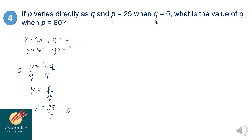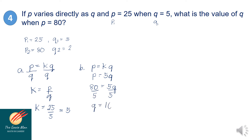Since I now know the value of the constant of variation, I can use the equation of the relation. So p equals k times q. Substituting k equals 5: p equals 5 times q. Since p equals 80, I can write 80 equals 5 times q. Dividing both sides by 5, q is equal to 16. This is the value of the second q.